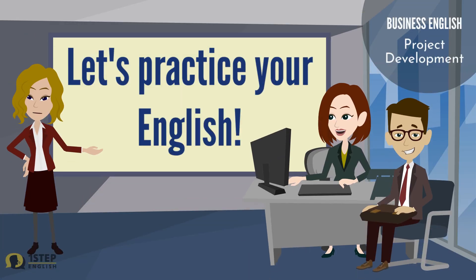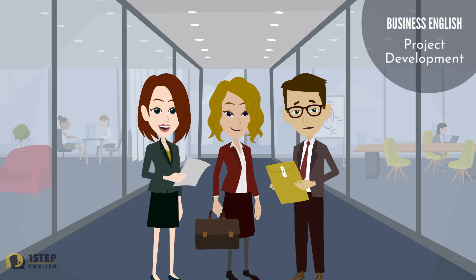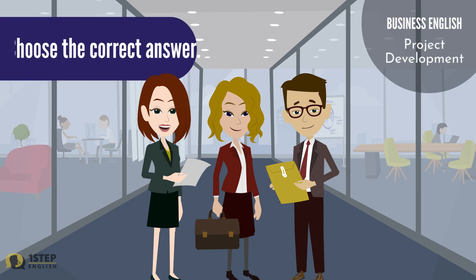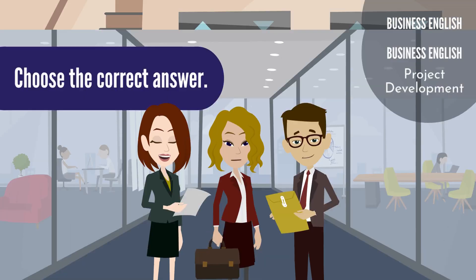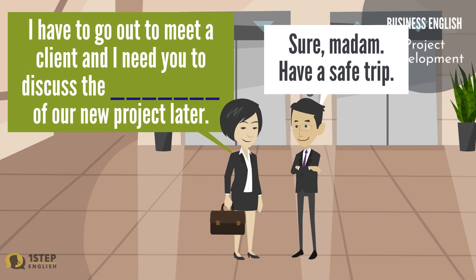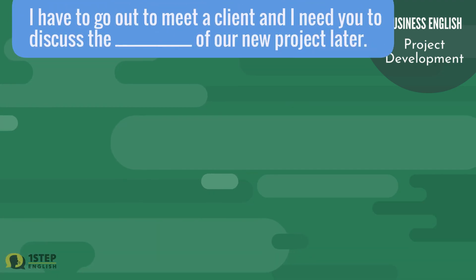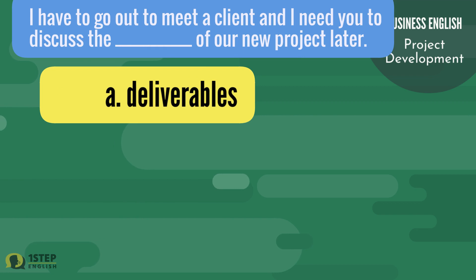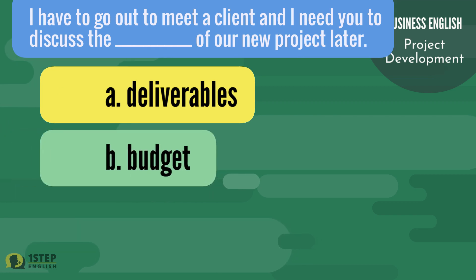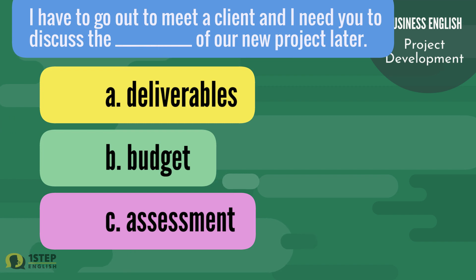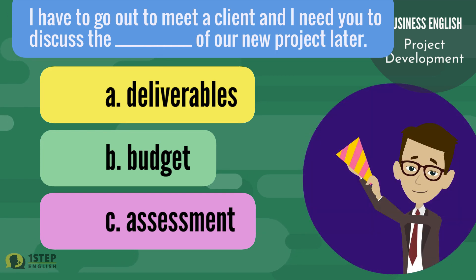Let's practice your English. Ready your pen and paper, then try to answer the exercise. Choose the correct answer. 'I have to go out to meet a client, and I need you to discuss the ___ of our new project later.' The correct answer is: deliverables.